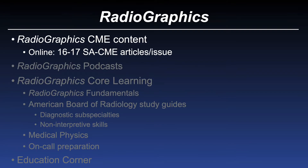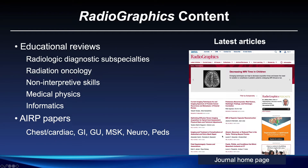We'll begin with the CME content that Radiographics offers. As you probably know, each issue of the journal offers 16 or 17 articles, all of which offer self-assessment CME credit. If you look at the content of the journal, you'll see that this spans a variety of different topics. We cover all of the different diagnostic specialties, but we also offer reviews in radiation oncology, non-interpretative skills, medical physics, and informatics papers. Here on the right, you can see the journal homepage with a list of the most recently published articles over the last several weeks.